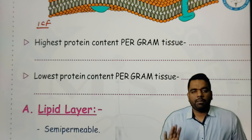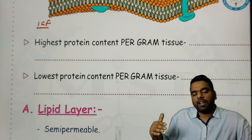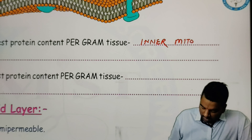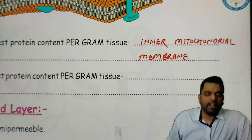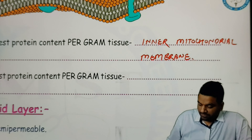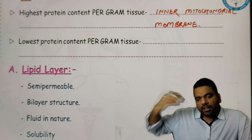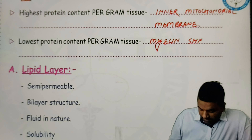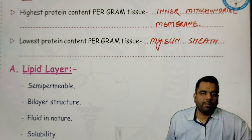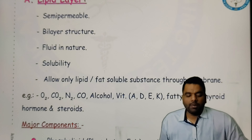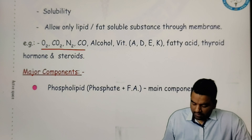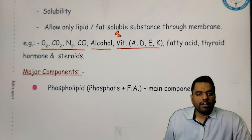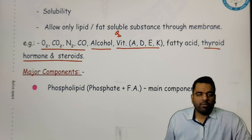Most of the lipid membranes have on average 55% protein and 40% lipid. But some areas in the body have more protein — around 80% — and that area becomes the highest protein content per gram of tissue. This area is your inner mitochondrial membrane, because mitochondria is a membranous organelle and its inner layer has the maximum amount of protein. Similarly, some areas of the body contain more lipid — around 70–80% — so the protein content becomes very less. That is called lowest protein content per gram of tissue, and that is your myelin sheath, present on the axon area of neurons, providing faster nerve conduction.